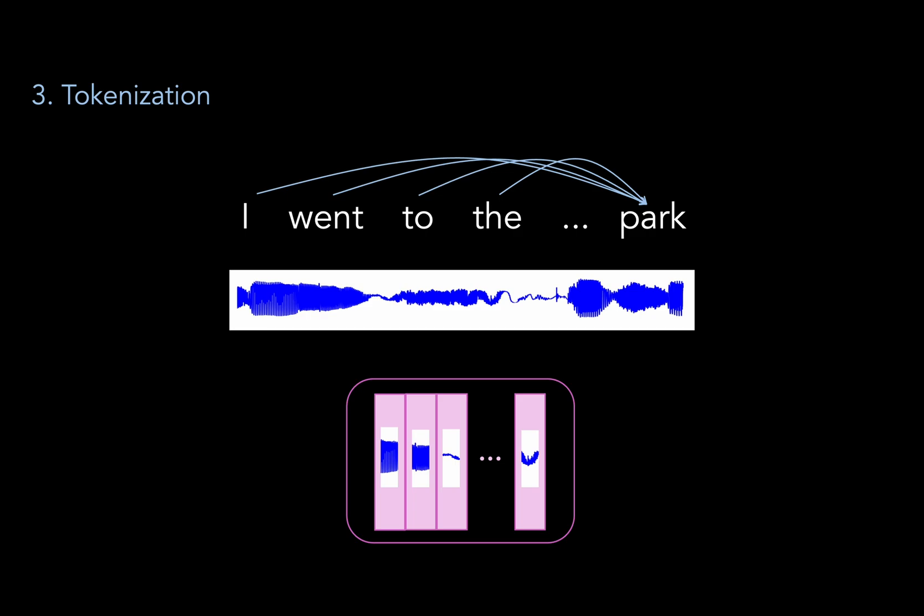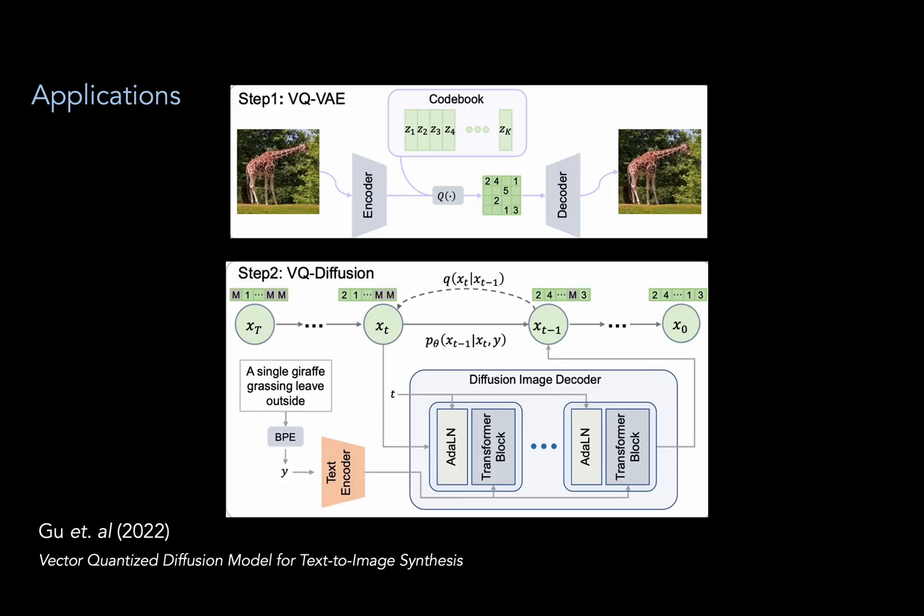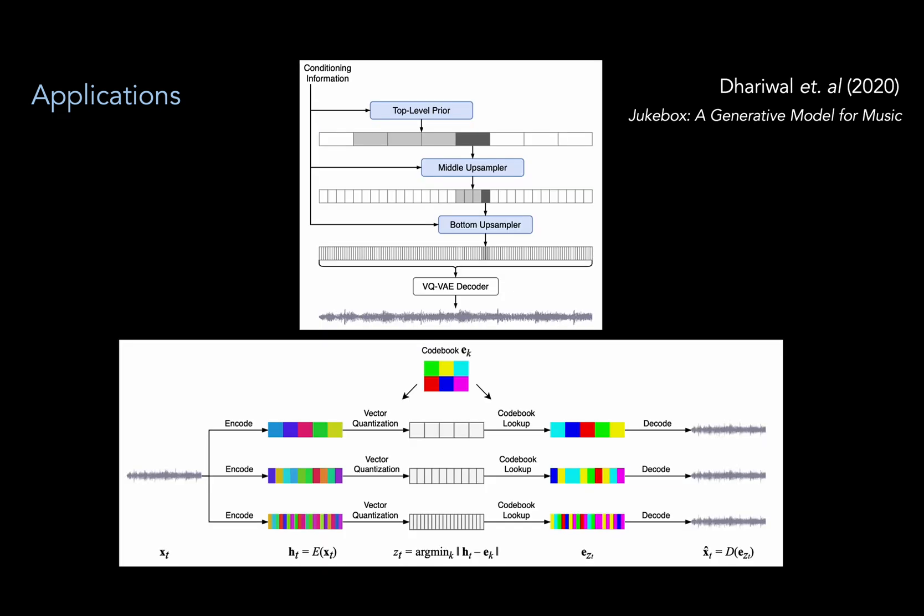And indeed, this combined approach has been used to great effect in the generation of images, speech, and music. For example, one group trained a VQVAE to form image tokens, then combined this with a transformer-based diffusion model to perform text-to-image synthesis. Similarly, the creators of Jukebox use a hierarchical set of VQVAEs and some transformer models to generate music by sampling music tokens conditioned on high-level descriptors.